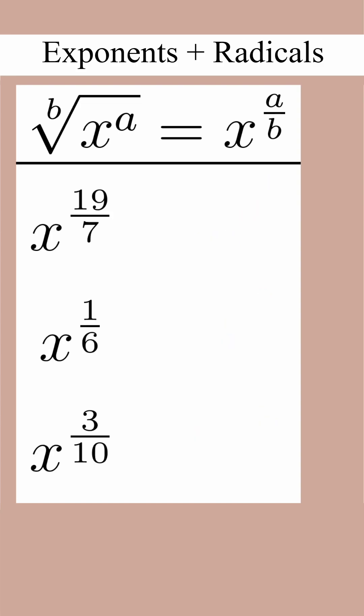To solve these examples, we'll once again use the same logic, just backwards. So remember, the power is the number on top and the root is the number on the bottom. Note that in the second example, the implied exponent is 1, so we didn't need to put a 1 next to that x.